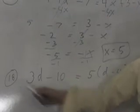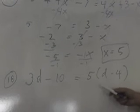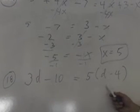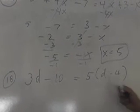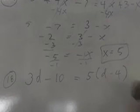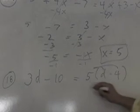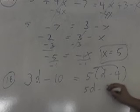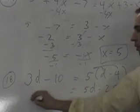Number 18 on page 137. 3d minus 10 equals 5. Now what do we have that's different than the other ones? What's so different about this, Gabby? Distributive. Right stuff. So we do that first. 5d minus 20. And then we have the same sort of problem.